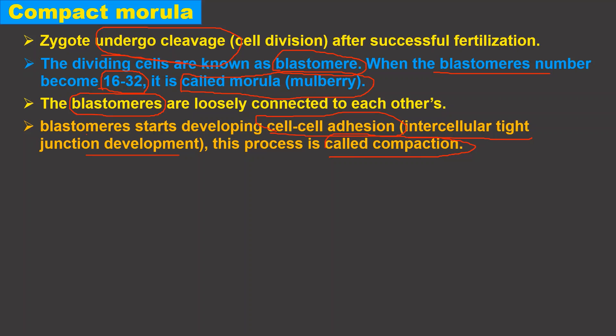Many believe that this compaction occurs when the embryo is at the 8-cell stage — that process is initiated at this stage. But when fully compaction develops, that structure is called, at the time of morula, the compact morula.